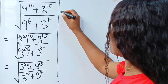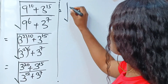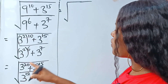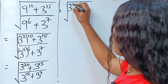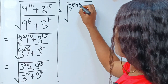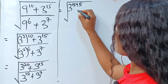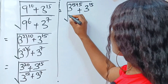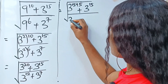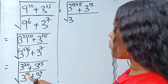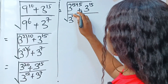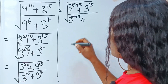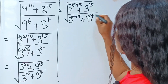Now we have that this is equal to the square root of: 3 to the power of 20 can be written as 3 to the power of 15 plus 5, plus 3 to the power of 15, divided by 3 to the power of 12 — which can be written as 7 plus 5 — plus 3 to the power of 7.